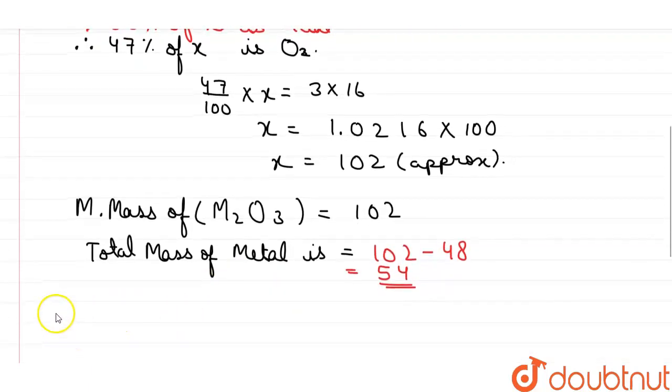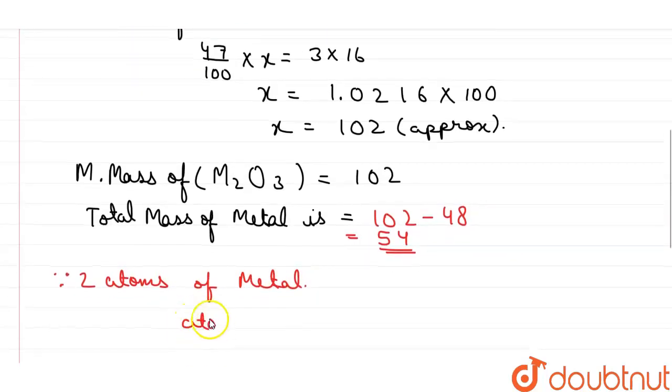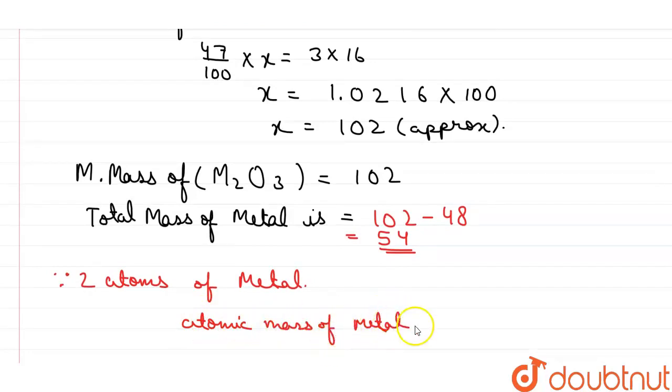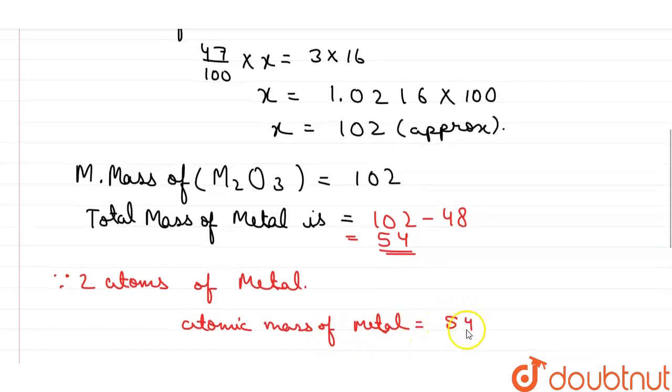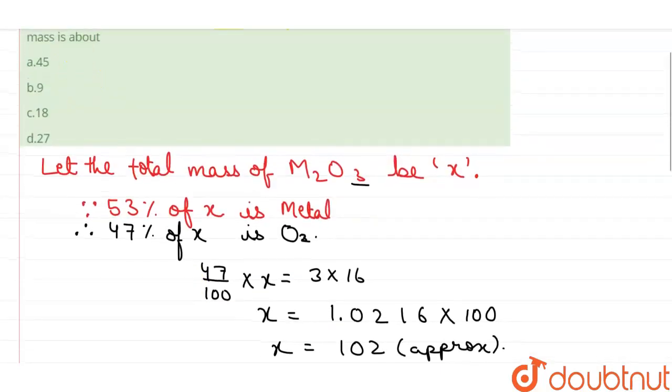Since there are two atoms of M, so atomic mass of metal is equals to 54 by 2, that is 27 atomic mass unit. So the correct option is option B. Thank you.